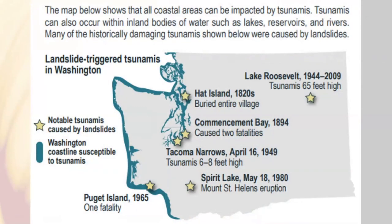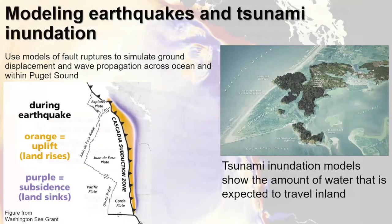All of Washington's coastline is susceptible to tsunamis. Interestingly, some of the most notable tsunamis in our history have happened by landslides both within the Puget Sound and within lakes across the state. Each star on this map represents a notable tsunami caused by a landslide in the last 100 to 200 years. We use the tsunami model Carrie talked about, simulating uplift offshore and earthquake subsidence onshore, then allowing the wave to propagate from the Cascadia subduction zone all the way through the Strait of Juan de Fuca and into the Puget Sound.